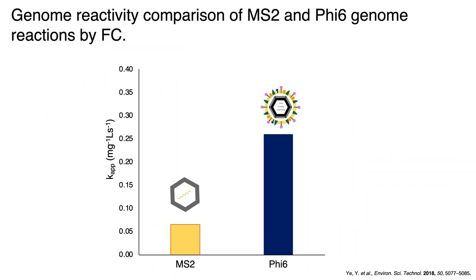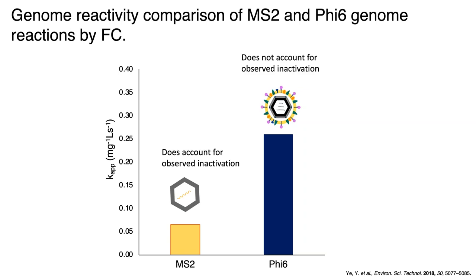Looking at genome data: the PHI-6 genome reacted faster than the MS2 genome. However, comparing genome reaction rates to the rate of inactivation, MS2's genome was reacting at about the same rate as virus inactivation. Whereas for the enveloped PHI-6, the genome was reacting slower than it was being inactivated. This suggests that genome reactions are not driving inactivation of the enveloped virus — but they were for our non-enveloped virus.